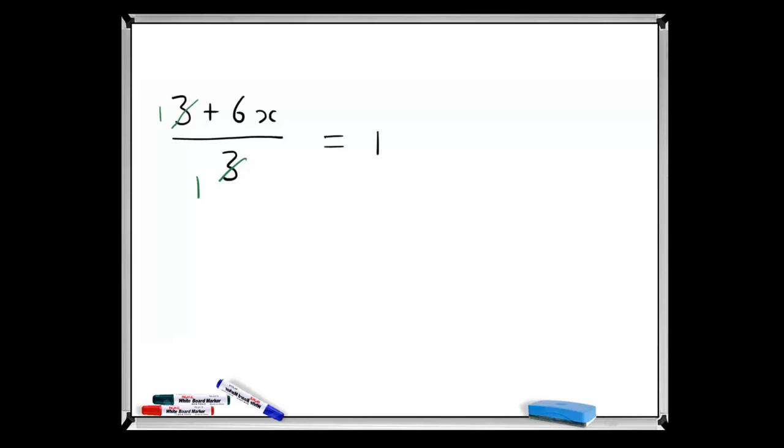So if we do that, we would end up with 1 plus 6x, and unfortunately, that's not true. The reason it's not true is because cancelling is short for cancel common factors.